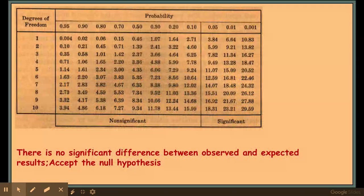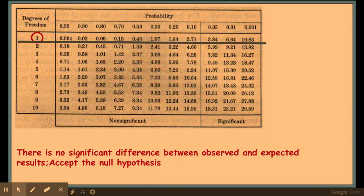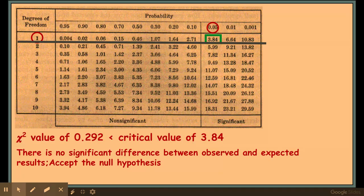So in our specific example here, I've got degrees of freedom 1, so I'm looking at this line here. The critical value at the 5% level is 3.84, and my chi-squared value was 0.292.